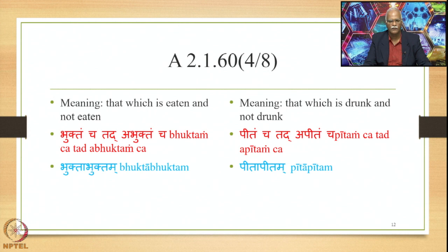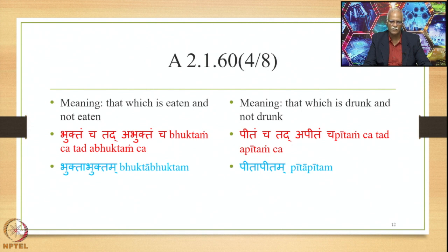Similarly, for the meaning 'that which is eaten and not eaten,' we have Bhuktam cha tat Abhuktam cha. Bhukta is the Ktaanth word from the verbal root Bhuja, not qualified by negation, while Abhukta has Bhukta qualified by the negation A. They are co-referential, so they get compounded by this Sutra, giving Bhuktabhukta as the finally derived output, and Bhuktabhuktam as the case-ending Subanta.